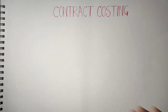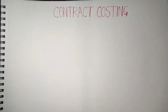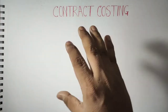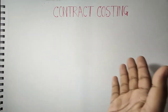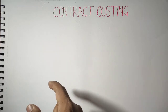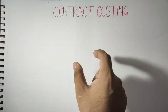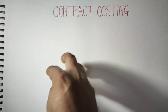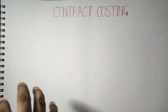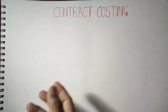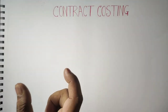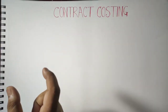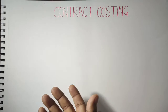Hello subscribers and dear students, today my topic of discussion is contract costing. In my earlier video I discussed job costing — job costing and contract costing are somehow the same. I gave an example where a father takes his two sons to a tailor, and the tailor takes the job, giving each a job number with specific requirements for preparing a blazer and suit. The key point in job costing is that the time duration is short.